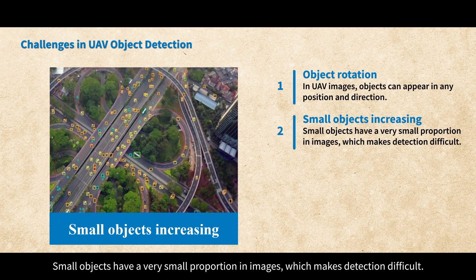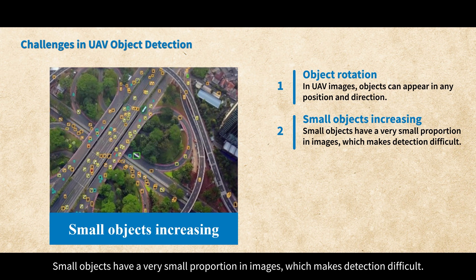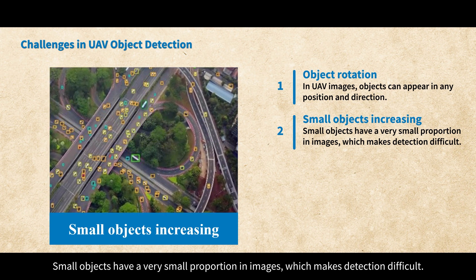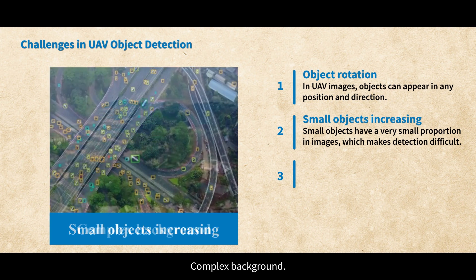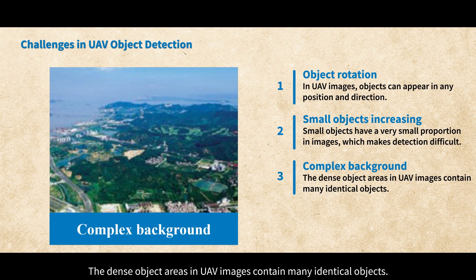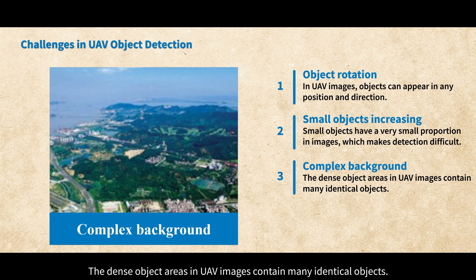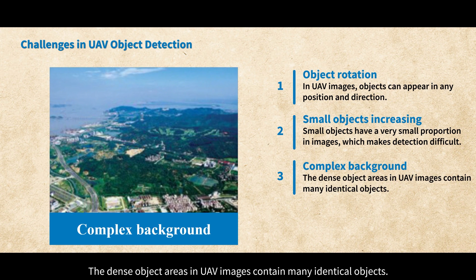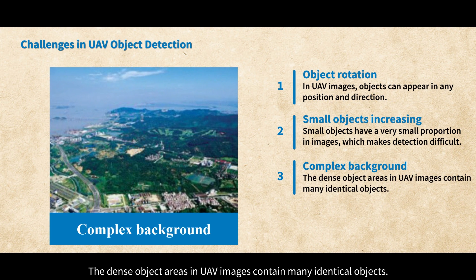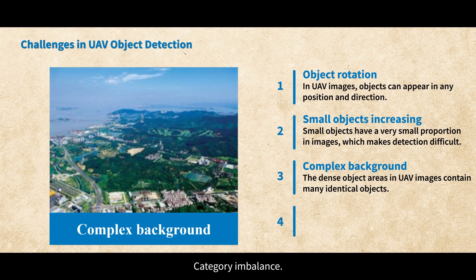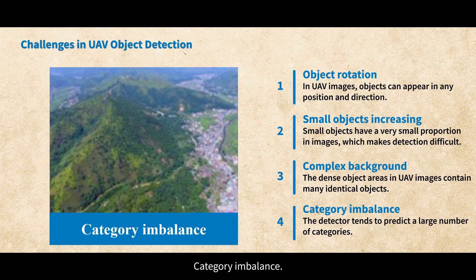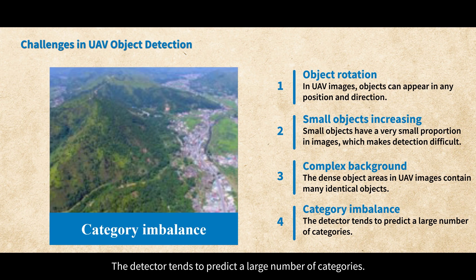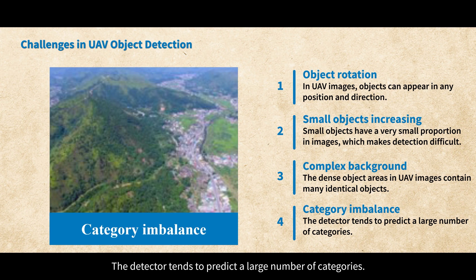Small objects have a very small proportion in images, which makes detection difficult. Complex background: the dense object areas in UAV images contain many identical objects. Category imbalance: the detector tends to predict a large number of categories.